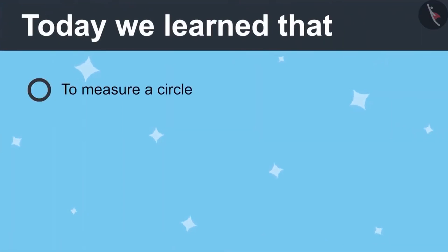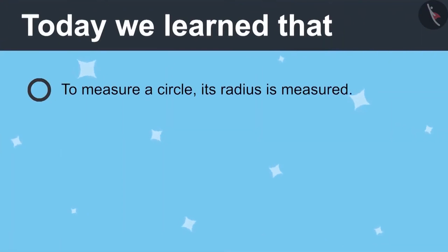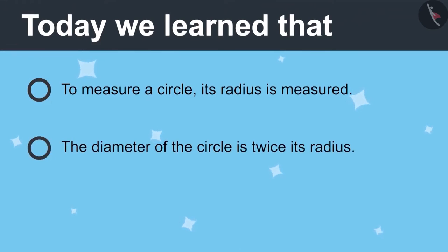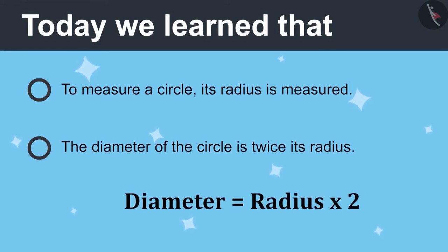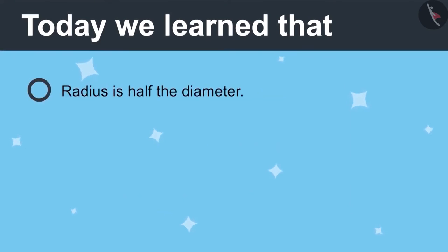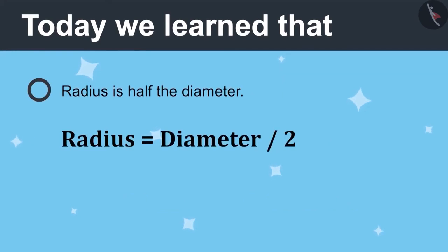Today we learned: to measure a circle, its radius is measured. The diameter of the circle is twice its radius. Diameter is equal to radius multiplied by 2. Radius is half the diameter. Radius is equal to diameter divided by 2.